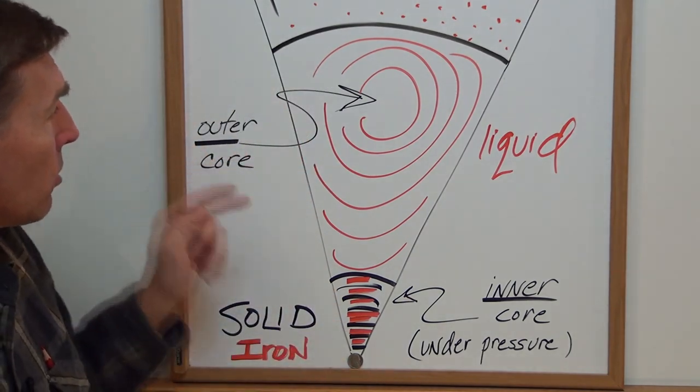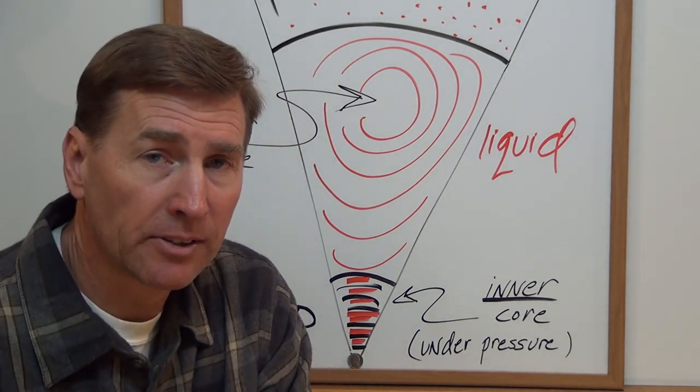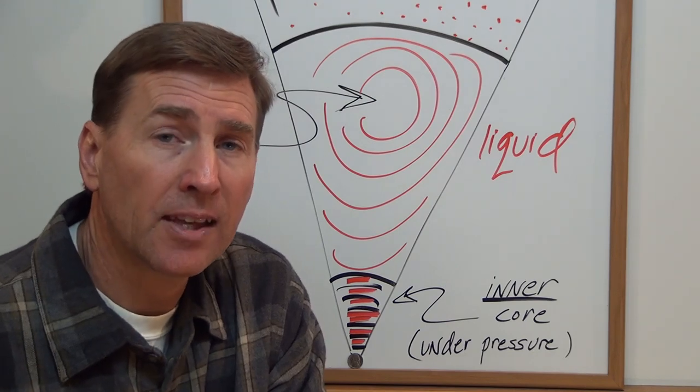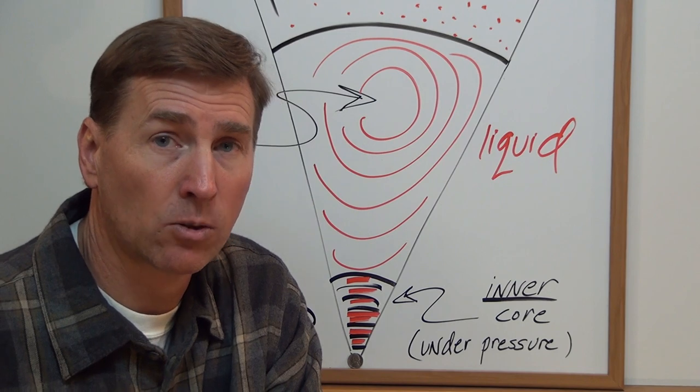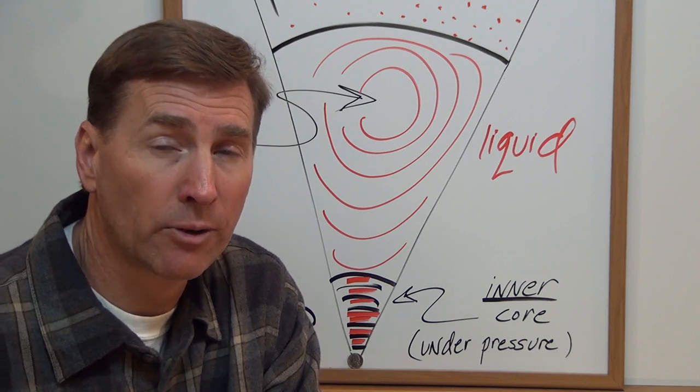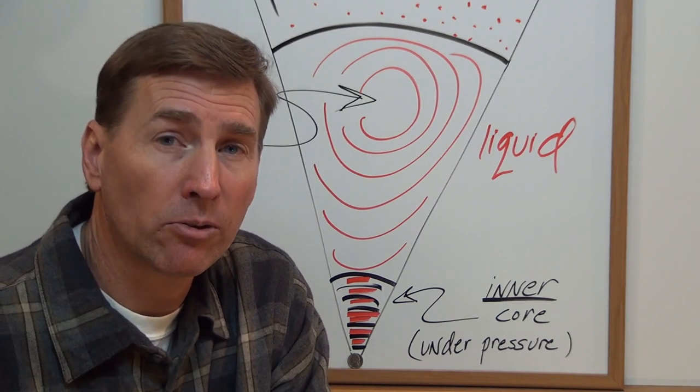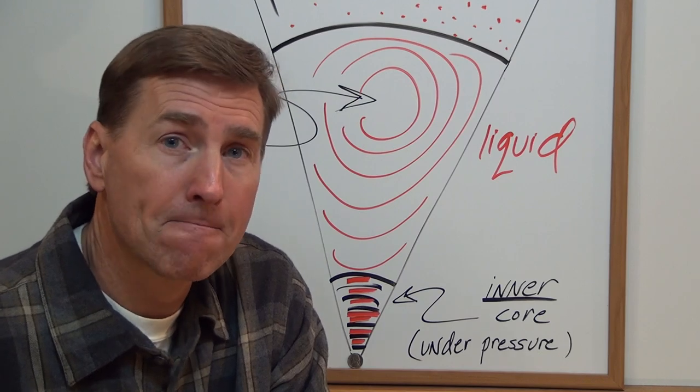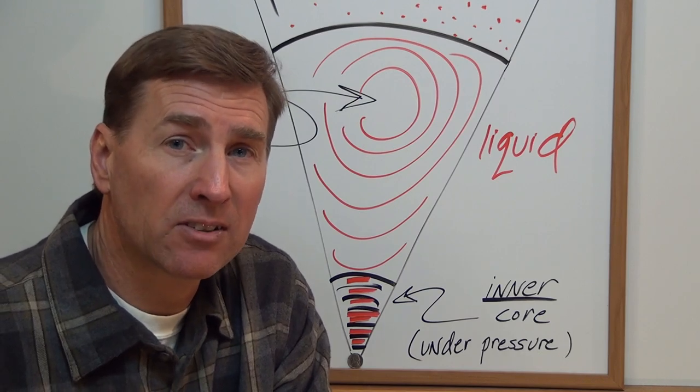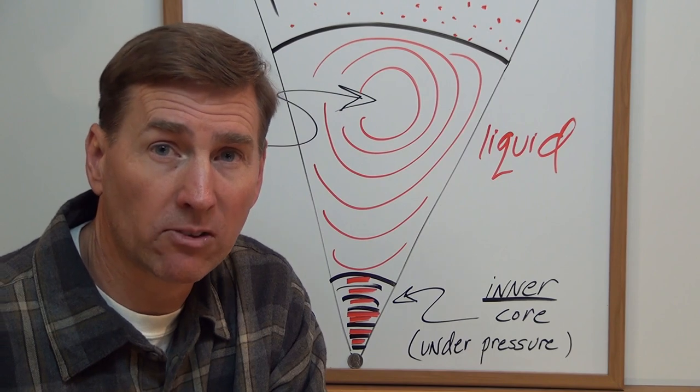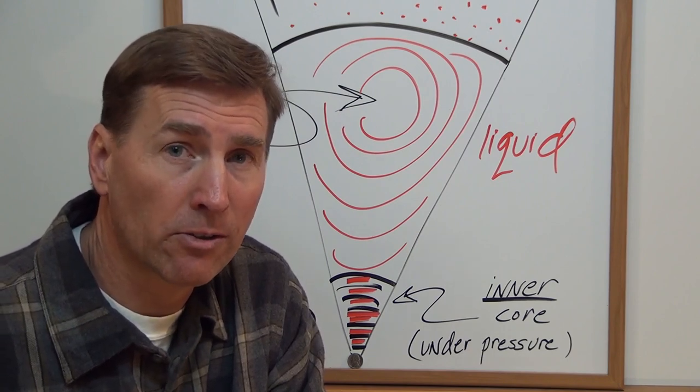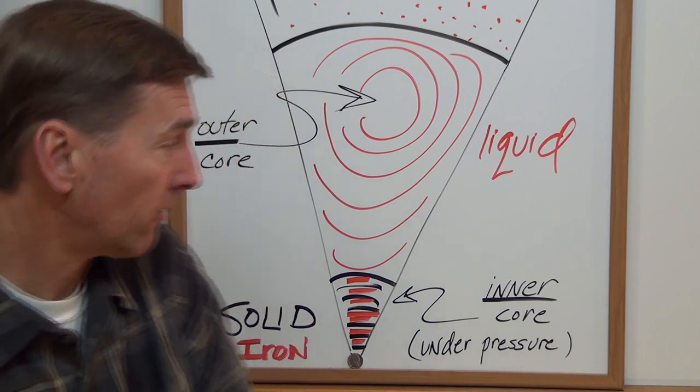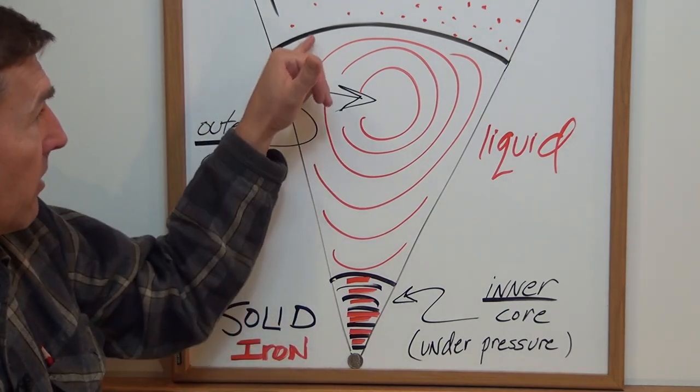Moving on up, the outer core scientists believe is liquid, and we think that it generates the earth's magnetic field as it convects around. This would also have heavy minerals and elements. Now how do scientists know we have these different layers - let's say one solid, one's liquid? They use seismic waves that are sent through the earth, and then they can detect these different boundaries such as this one and this one.